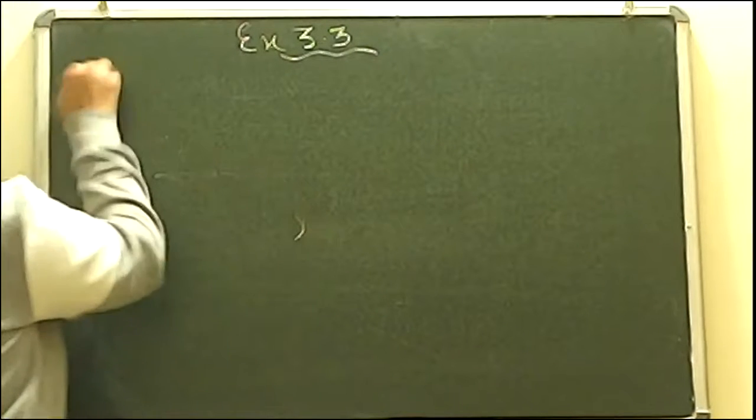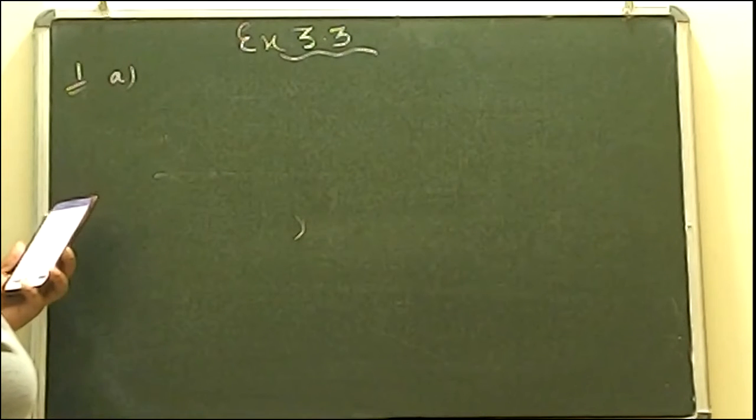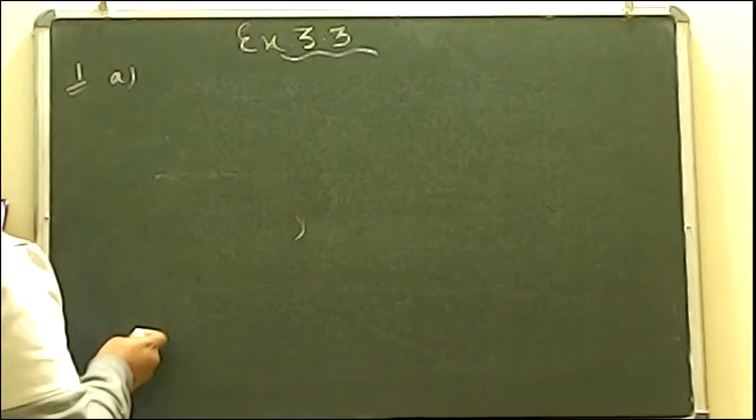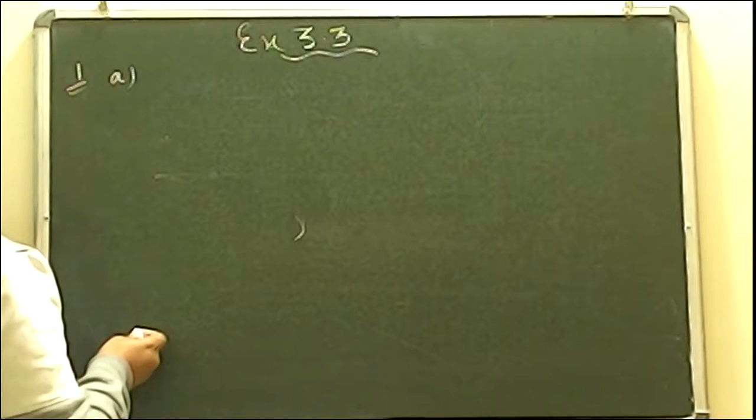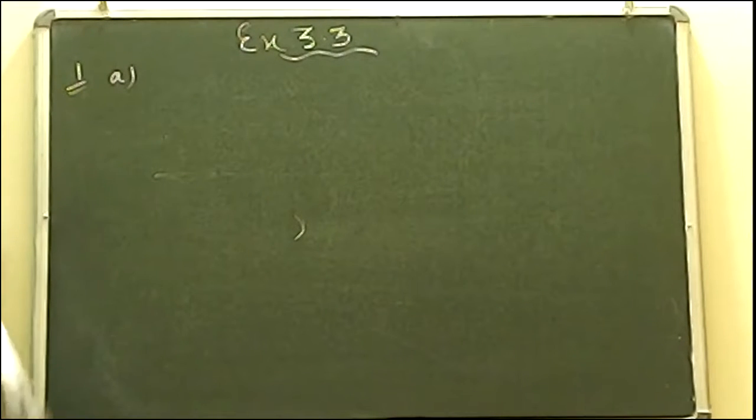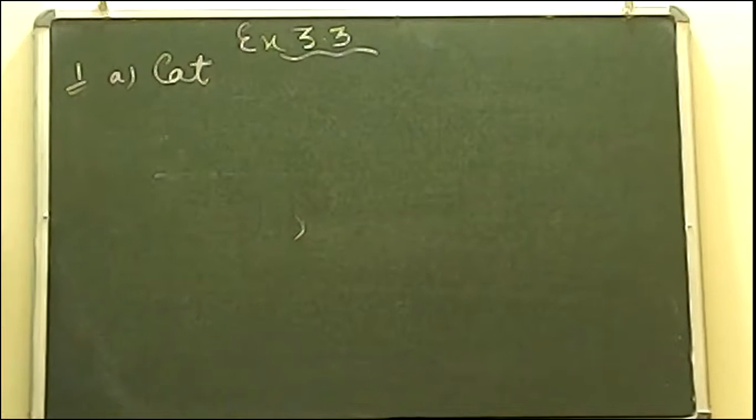The first one is asking which is the most popular pet. If you see the bar graph, one side you have all the pets written on x-axis and on y-axis you have the number of students written, showing the pets owned by students of class 7. You have to see which bar is the longest bar. The answer is cat. The bar of cat is the longest one, meaning cat is the most popular pet.